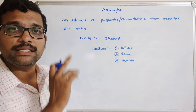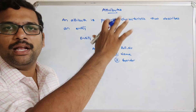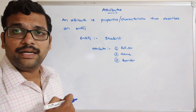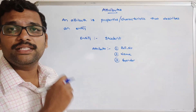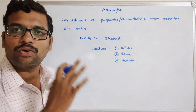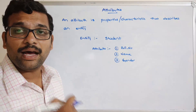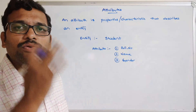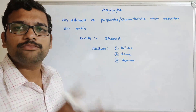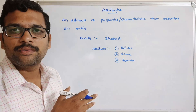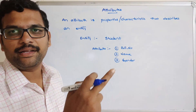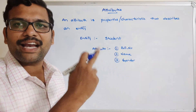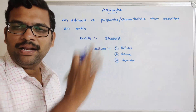In our relational database management system, we call these attributes as columns, because in RDBMS we represent data in terms of rows and columns. So columns are called attributes and rows are called entities. The properties that describe a particular entity are called attributes.